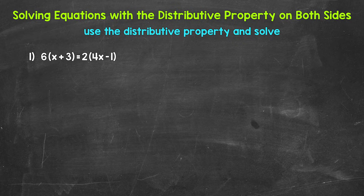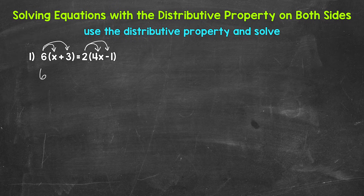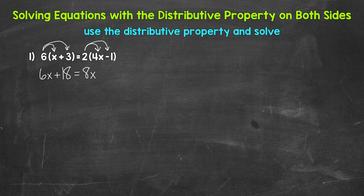Remember, when we use the distributive property, we distribute what's on the outside of the parentheses to the terms inside. On the left side, we distribute 6 to x and 3. On the right side, we distribute 2 to 4x and negative 1. So on the left, 6 times x and 6 times 3 gives us 6x + 18. On the right, 2 times 4x gives us 8x, and 2 times negative 1 gives us negative 2, so 8x − 2.